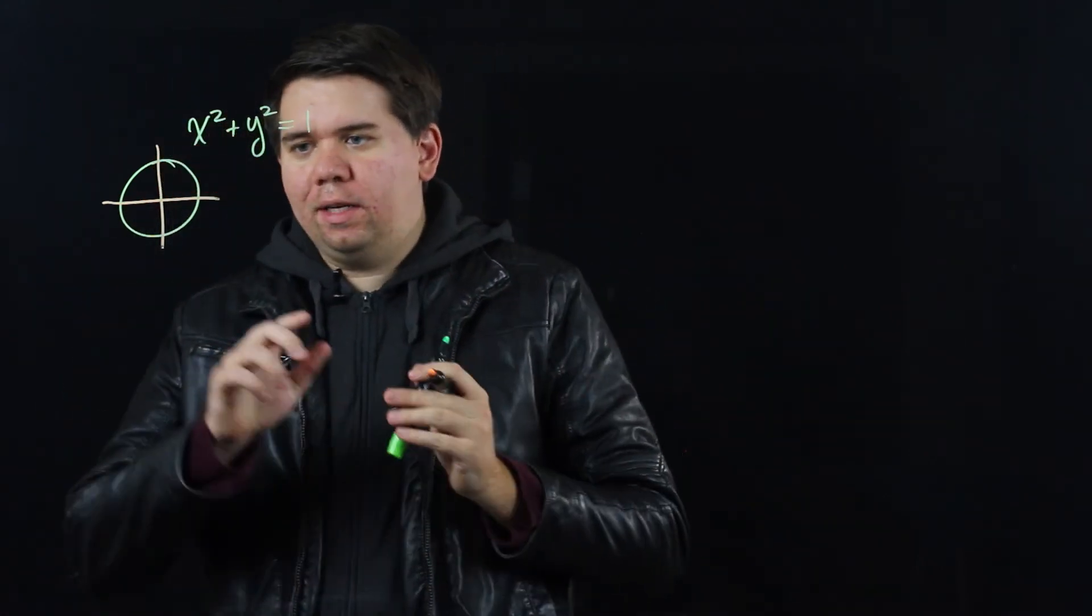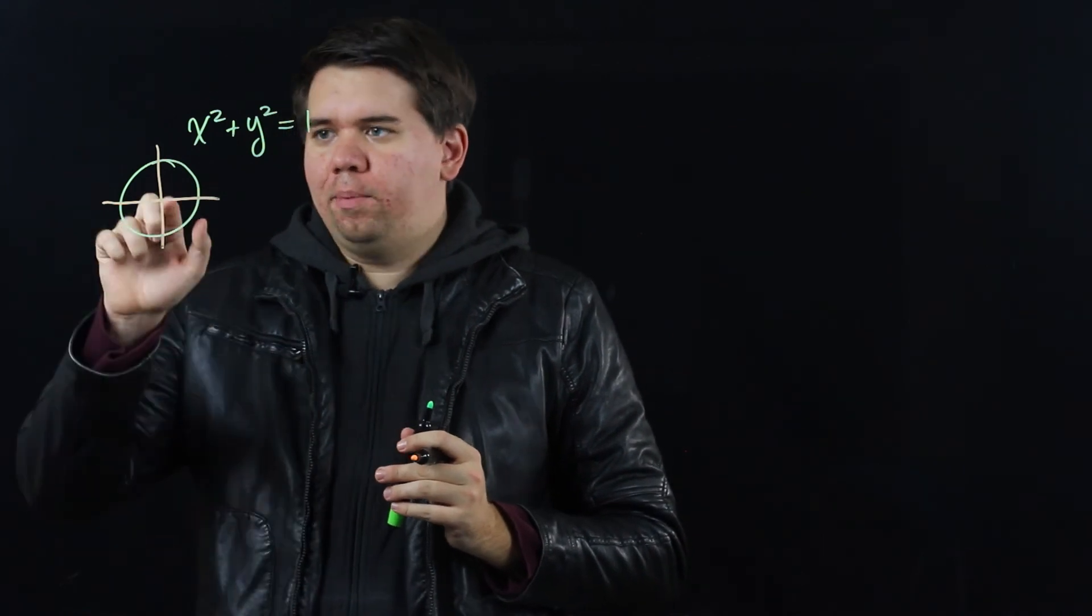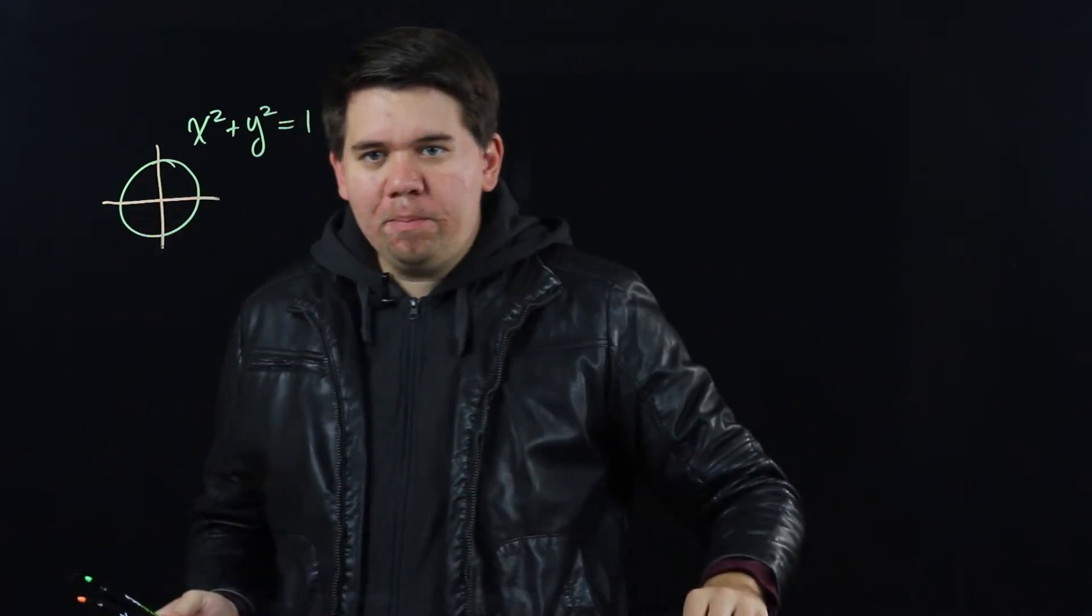Now this circle has lots of familiar points. It has the point (1,0), it has the point (0,1), and it has some other points on there like, for example, if you go to 1/2 it would have the point (1/2, √3/2).